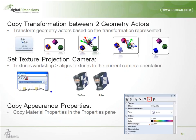Copy Transformation between two geometry actors is now available. If you want to align a blue box to a pink box, you can pick an edge or face on one and an edge or face on the other, and have them aligned based on those selections. This just expands the alignment capabilities — so if you move one part and need another to come with it, that's what this feature is for.